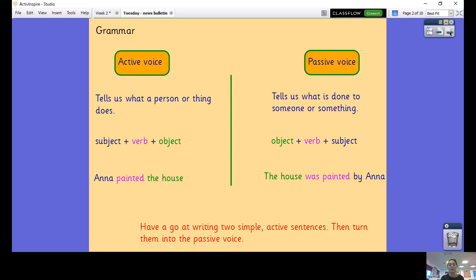I'd like you to have a go at writing two of your own simple active sentences that you could then turn into the passive voice. It could just be as simple as 'the boy kicked the ball' and then the passive voice would be 'the ball was kicked by the boy.' Pause the video now, give yourself two minutes and have a go at writing two of those sentences please.